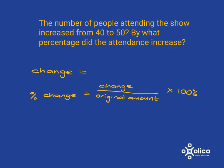So let's do an example. If the number of people attending a show increased from 40 to 50, by what percentage did the attendance increase? Percentage change is about the actual change relative to the number of people who were there to start. To work it out, we first need to know how much things changed by — it changed from 40 to 50, so the change was 10 people. To work out percentage change, we take that change over the original amount and then multiply by 100% to turn it into a percentage.